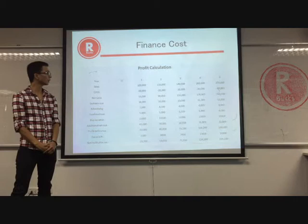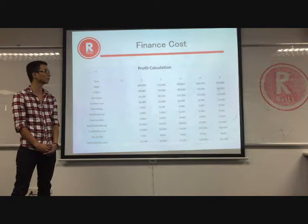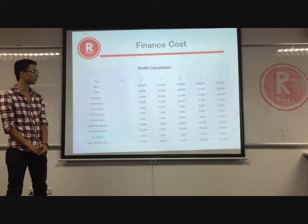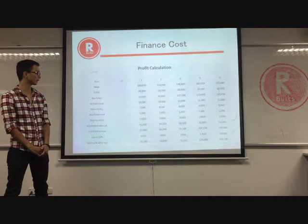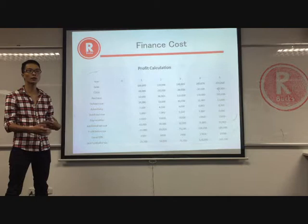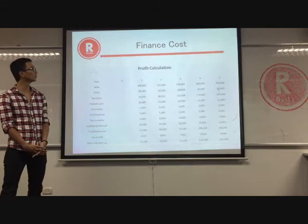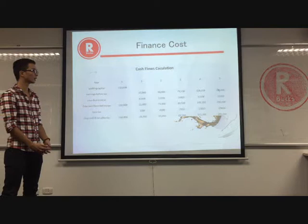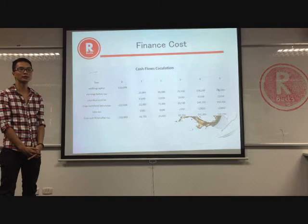Looking at some numbers, we calculated the profit from year one to year five. Sales increased dramatically from $100,000 to $250,000. Working capital is depreciated over 10 years using the straight-line method. We make a loss in year one, but by using advertising from year one to year two, we gain more profit in years three, four, and five. The cash flow turns to a net cash inflow from year two to year five.